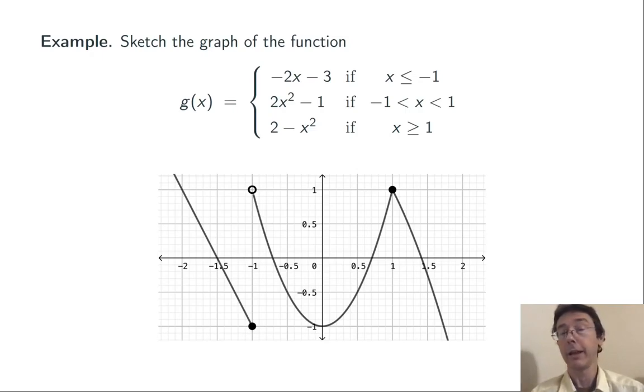At x equals positive 1, there's actually a solid dot because that third branch of this function, y equals 2 minus x squared for x greater than or equal to 1, has the value of y equals 1 when x equals 1. So the two branches actually coincide at the value x equals 1. Overall, here's the full graph of y equals g of x.